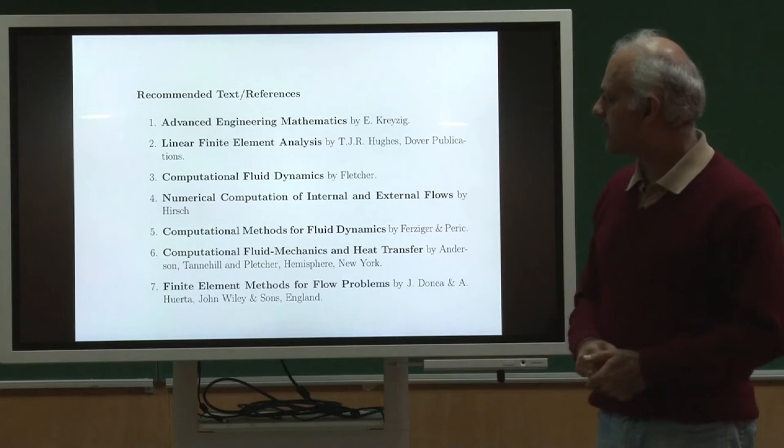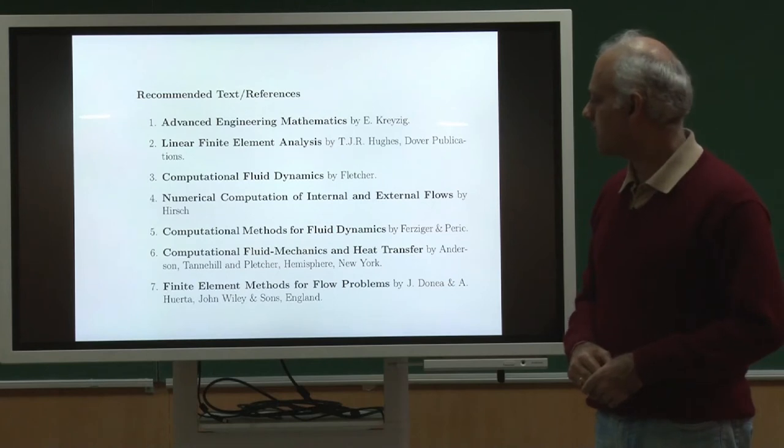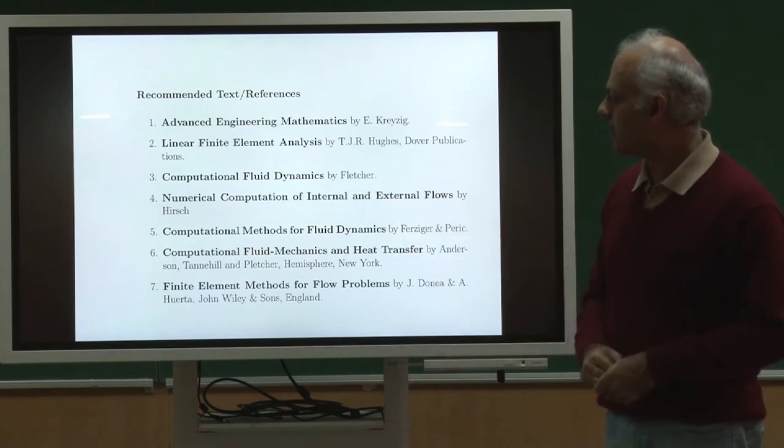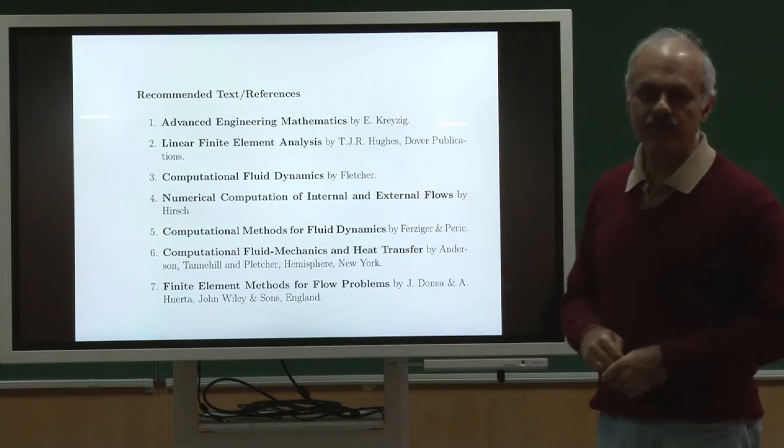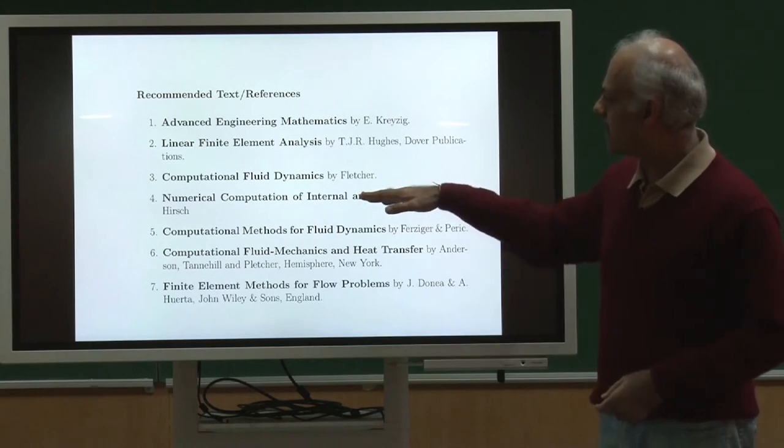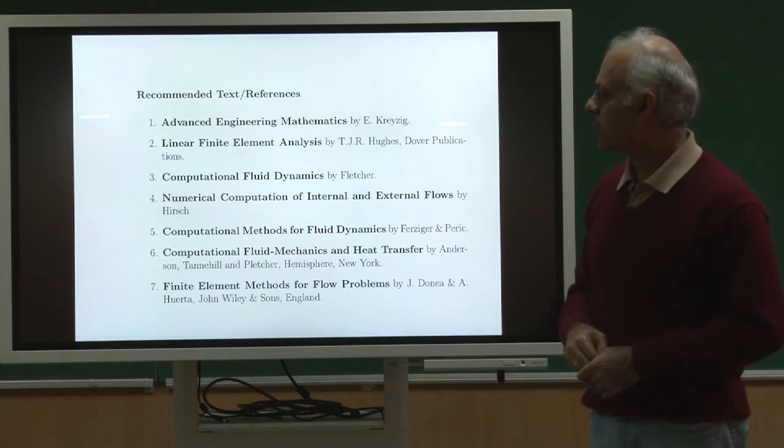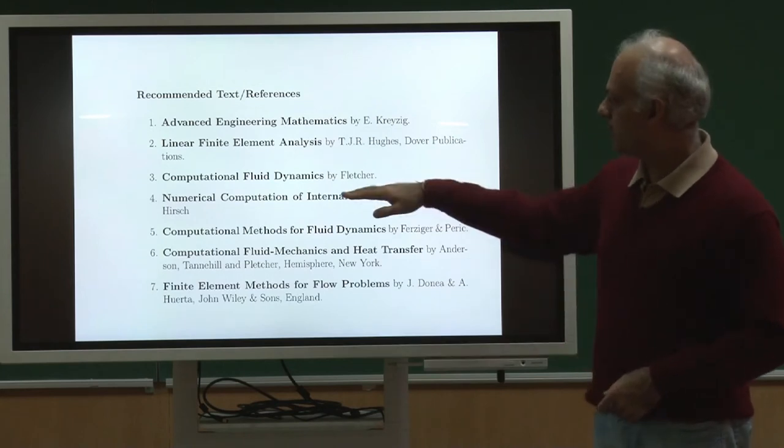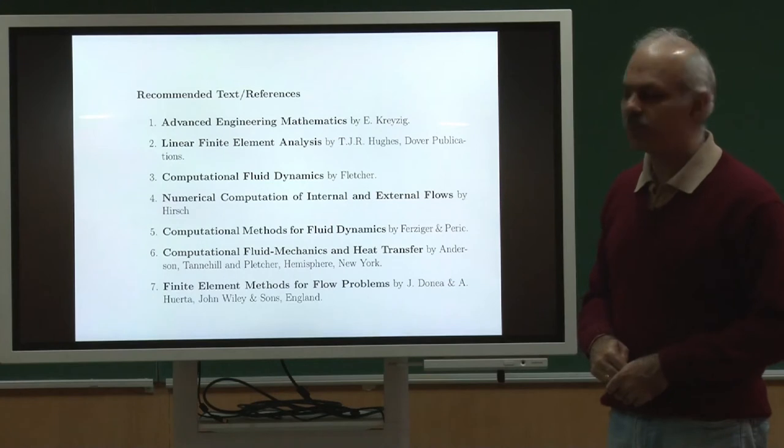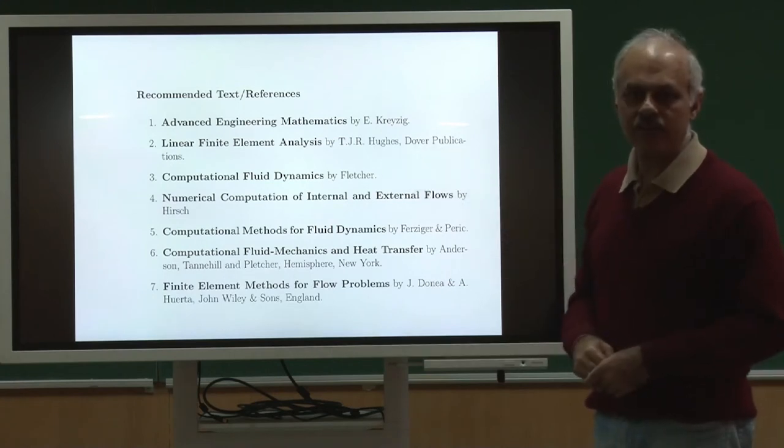So this book has several versions, but the latest one is from the Dover publications. So you should be able to find a copy of this. I strongly encourage you to get a copy of this book and it would help you even later when you want to use the method. The third book is by Professor Fletcher with a very general title, Computational Fluid Dynamics. Again, it is a good reference book. Similarly, number four is a book by Professor Charles Hirsch which builds up more on finite difference, finite volume kind of methods, both for internal and external flows. We will use this as a reference book. In fact, it is a little bit easy reading compared to the book by Professor Hughes. So maybe if some of you find this going a little bit tough, you can first maybe read a little bit from Professor Hirsch's book and then go back to the book by Professor Hughes.